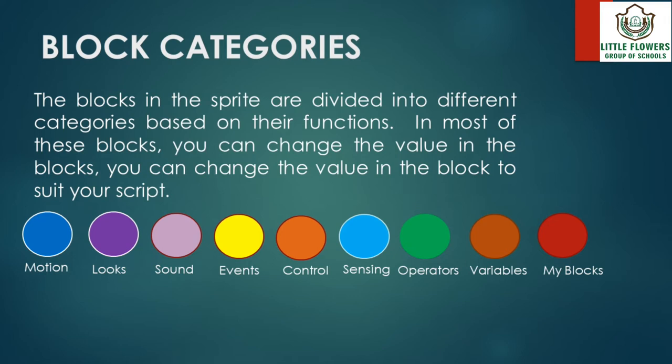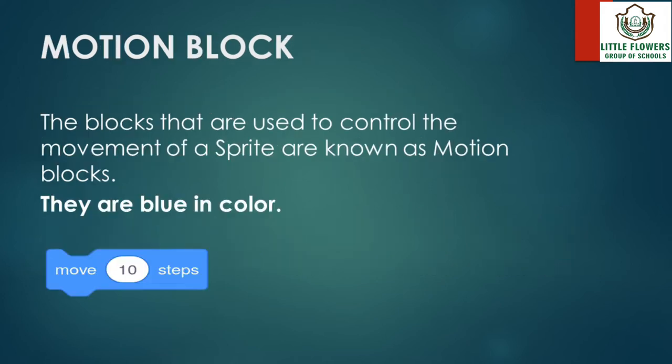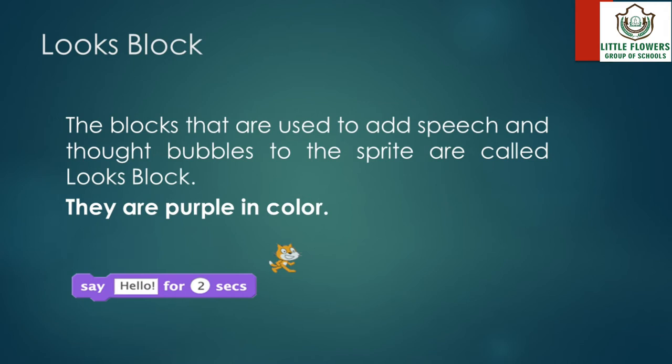Block categories: the blocks in the sprite are divided into different categories based on their functions. In most of these blocks you can change the value to suit your script. Motion blocks: the blocks that are used to control the movement of a sprite are known as motion blocks. They are blue in color.